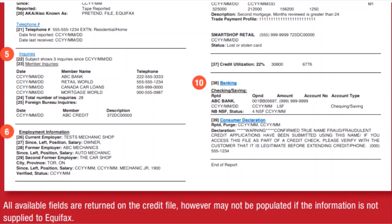A credit report is basically a summary of your unique financial history, and Equifax, TransUnion, and Experian will have to give that to you. The reason why you want to check all three is because sometimes there might be differences in terms of credit report data, but also credit score. You want to see if the data is consistent across all three credit bureaus or not.